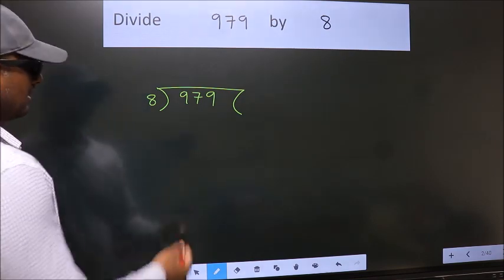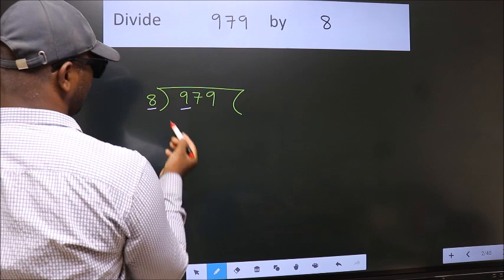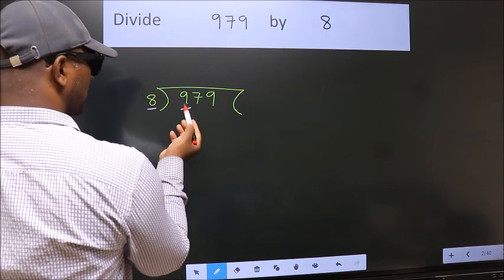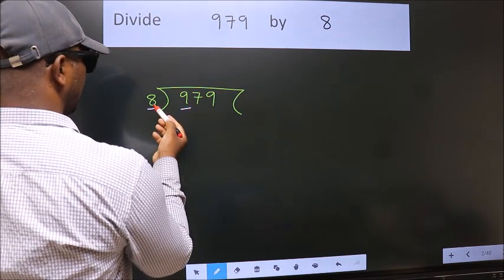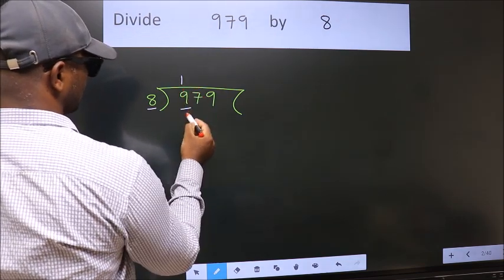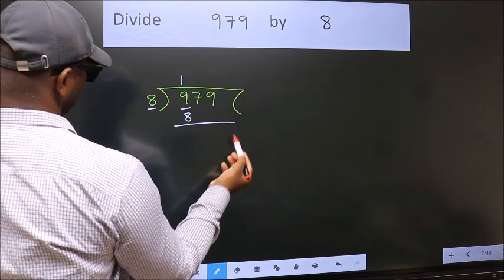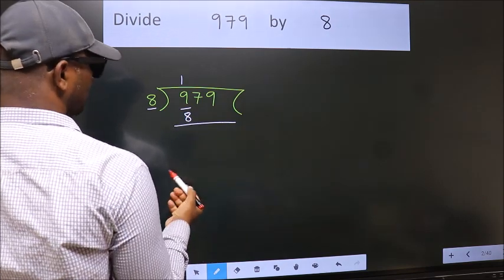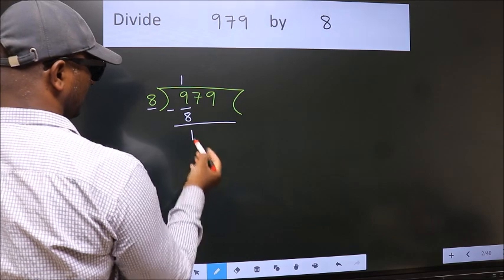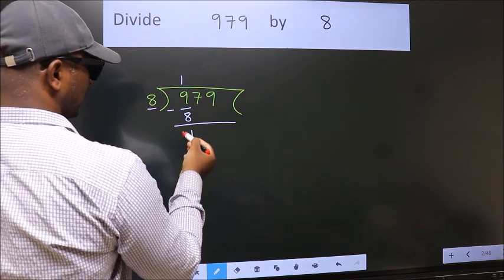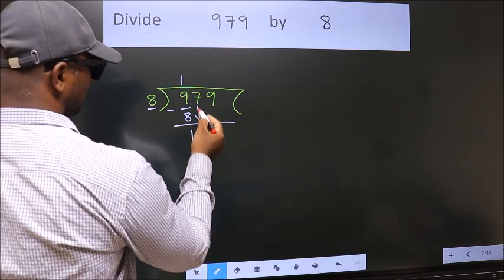Next, here we have 9, here 8. A number close to 9 in the 8 times table is 8 ones, which is 8. Now we should subtract. We get 1. After this, bring down the beside number.